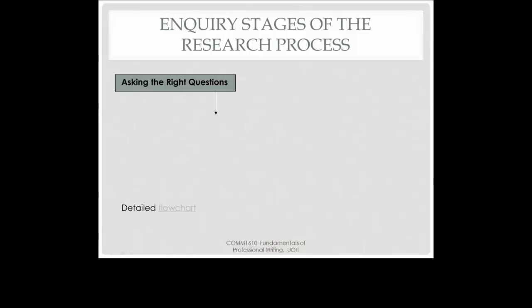In most university courses, you will be required to write research essays of some sort. Depending on the level of the course and the professor, you may need anywhere from 5 scholarly sources to 50 scholarly sources or more. As you progress through your university program, expectations regarding the level of research, the type of research question and argument, and critical analysis will increase. It's important to develop strong research skills and good habits now and to maintain those habits. Take what you learn in this course and apply the techniques and skills to all your courses.